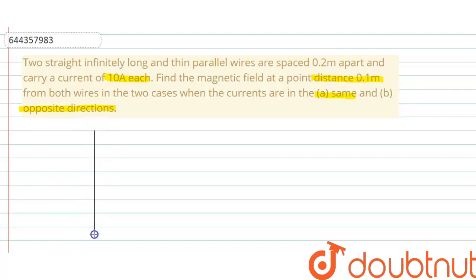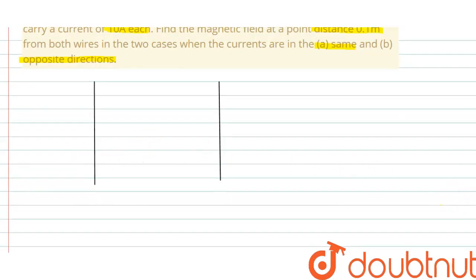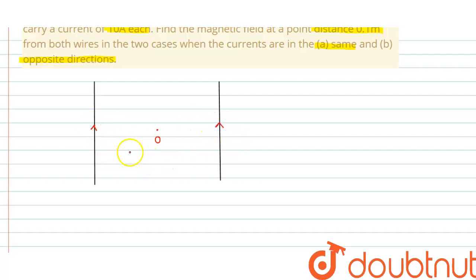So we have two straight current-carrying wires separated by a distance of 0.2 meters, and there is a point O which is 0.1 meters from each wire — that is, the center point. We have to calculate the net magnetic field at point O in two cases. When the currents are in the same direction, let's say the upward direction, this is wire 1 and this is wire 2.